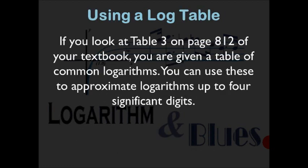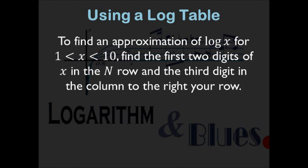If you look at page 8-12 in your textbook, it's Table 3, common logarithms of numbers. This table lets you approximate logs to up to 4 significant digits. To find the log of x for any x between 1 and 10, look for the first two digits in the n row and the third digit in the column to the right. The table goes from 10 down to 99.